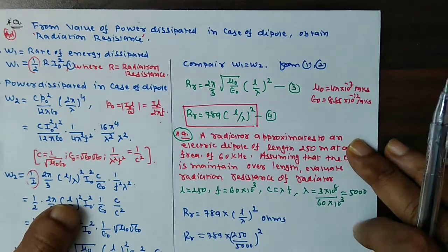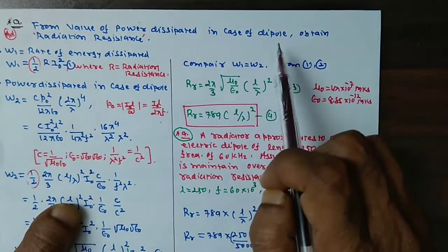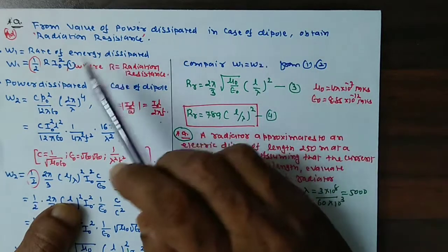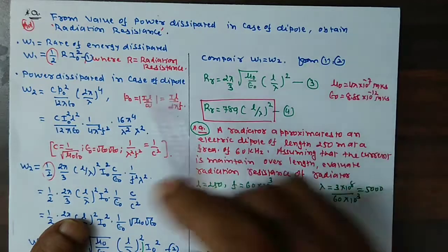We will derive the equation from the value of power dissipated in case of a dipole or dipole antenna, and we will obtain radiation resistance of this antenna.